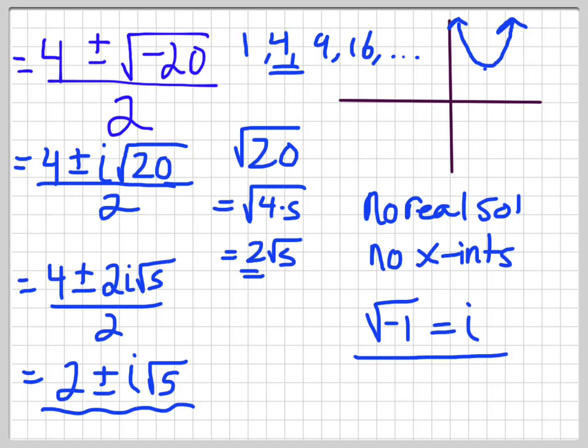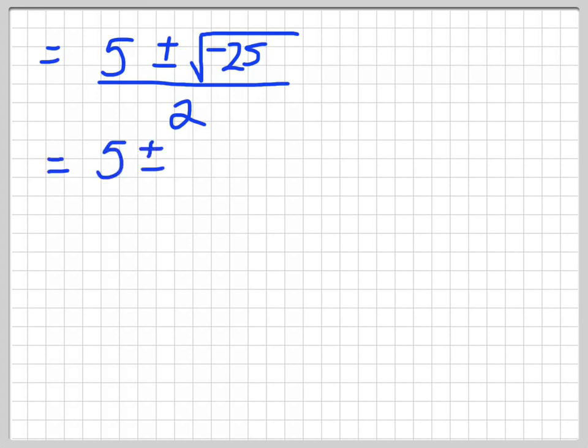So I'll just write another example. I won't write the quadratic, I'll just do one like this. Say 5 plus or minus negative 25 all over 2. So if you end up with a perfect square, we end up with like this. So 5 plus or minus, so the first step, get rid of the negative, put an i outside, just like that.